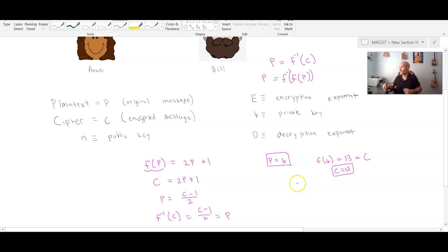And if now Bill received c equals 13 and wanted to obtain the original value that Ann had sent, he would take the f inverse function, plug in 13, which would give him 13 minus 1 over 2, which is 12 divided by 2, which is 6. And we do indeed see that that is the original message that was sent.